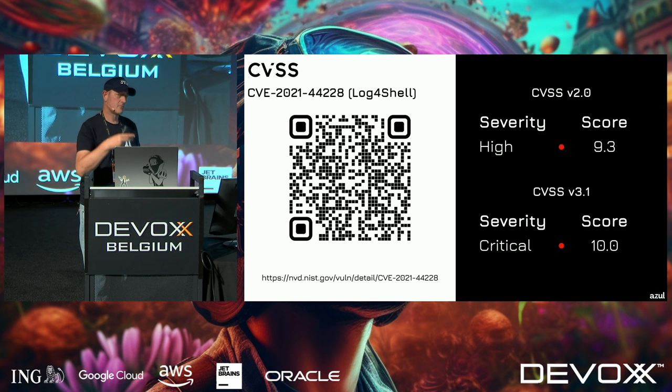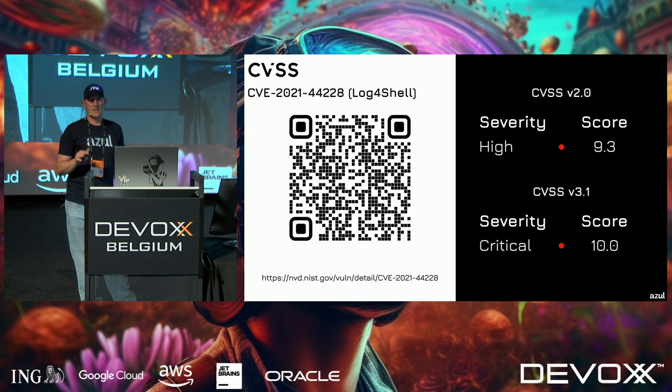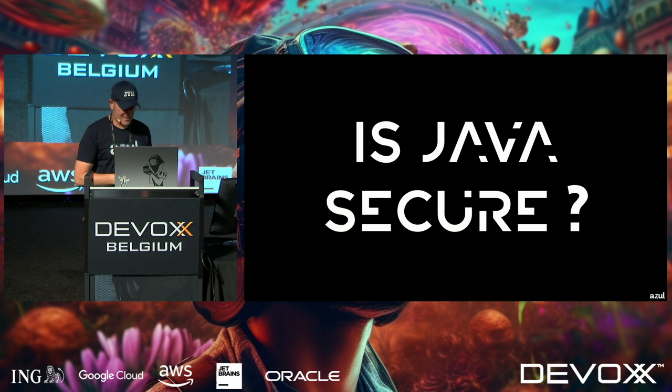For older CVEs you'll often find both a CVSS 2 and a CVSS 3.1 score; older ones only have the CVSS 2 score. You can find all these details at nvd.nist.gov, though be aware it's not a user-friendly page.